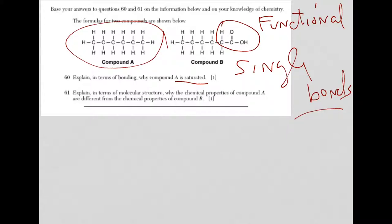So that's it. You have compound A which is an alkane, you have compound B which has this functional group, makes it an organic acid, and they have different properties.